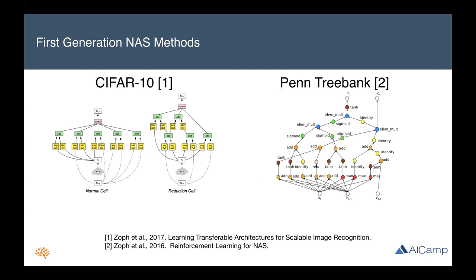What's the catch? The catch is the computational cost associated with NAS. First-generation NAS methods were able to achieve state-of-the-art performance on image classification and language modeling — showing NAS-discovered architectures for CIFAR-10 and Penn Treebank — but they did so at tremendous computational costs. In the case of CIFAR-10, it took over 3,000 GPU days to find the architecture, and for Penn Treebank it took over 10,000 CPU days — a massive amount of compute most practitioners don't have access to.